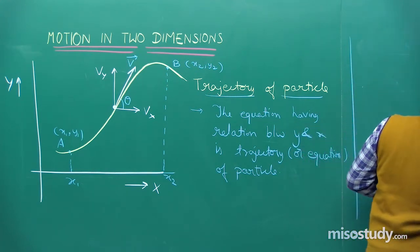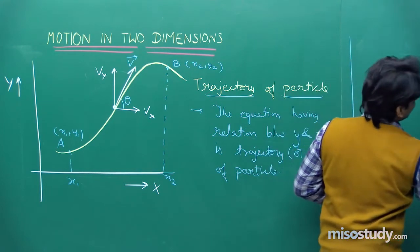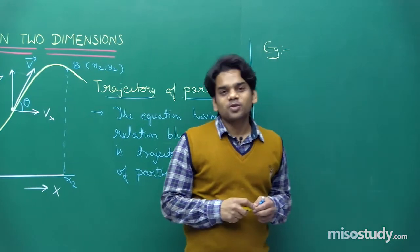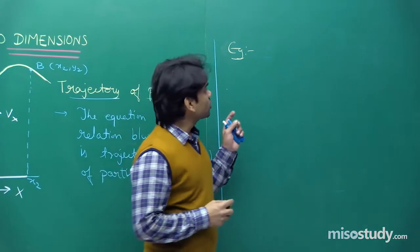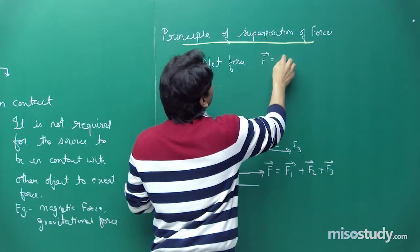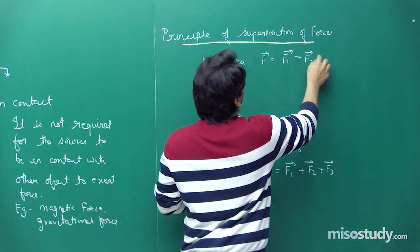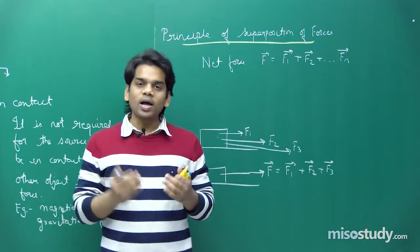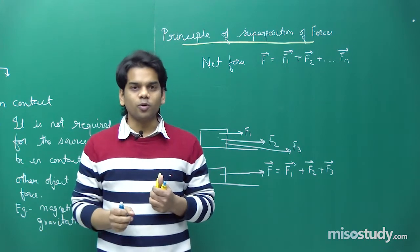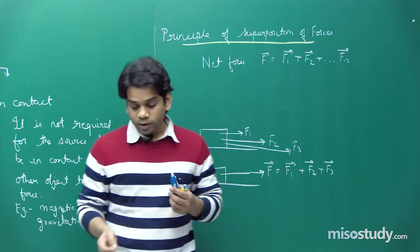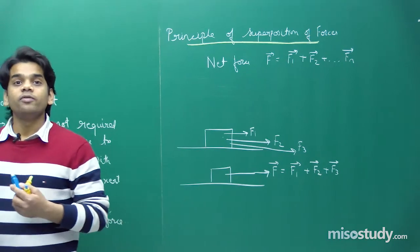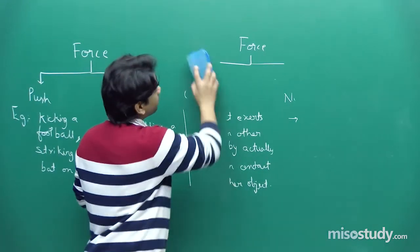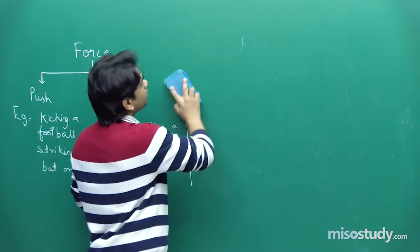Let's do an example to understand these concepts. A particle is moving in space along x and y directions. Now, f equals the vector sum of all forces acting on the object — there may be n number of forces, and we can replace all of them with one resultant force. Let's look at what force can do and write down the effects of force.